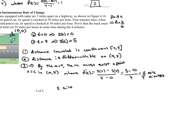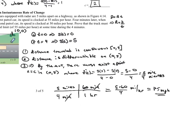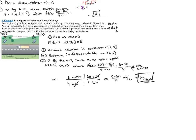So at some point in time, this truck had to be going a minimum of 75 miles per hour. The truck most likely went more than this — 75 is just the average. But according to the Mean Value Theorem, at some point in time, this truck had to be going exactly 75 miles per hour. That's what they can write the ticket for.